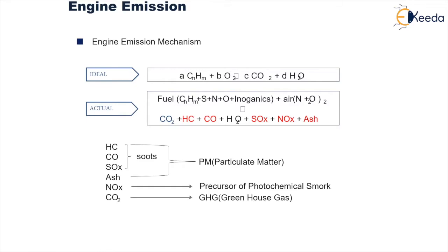The presence of carbon monoxide basically indicates that the combustion has been incomplete. These are the basic constituents of combustion. If we further classify, hydrocarbons, carbon monoxide, and oxides of sulfur are collectively called as soot particles, and when taken along with ash, these four elements form the PM — that is the particulate matter. Oxides of nitrogen are a precursor of the formation of photochemical smog, and carbon dioxide as we all very well know is a major greenhouse gas.